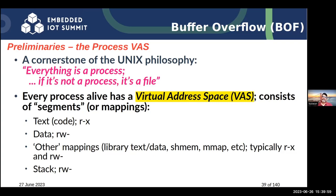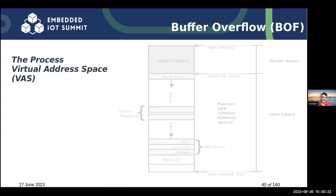The machine code is called the text and is kept in one portion of the virtual address space. The global data, static data, and variables are kept in another portion. We have text, we have data, we have other mappings — these are called mappings or segments. Other mappings include library text and data, shared memory mappings, and so on. And finally, we have the stack.